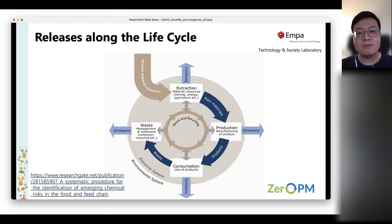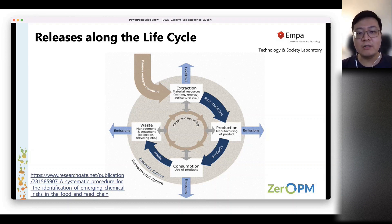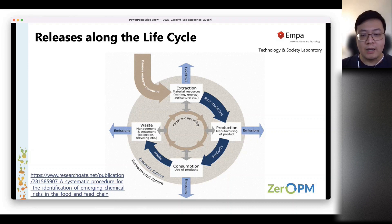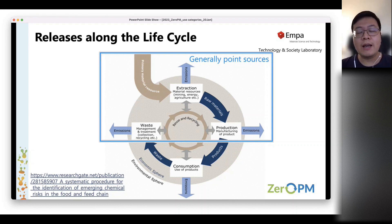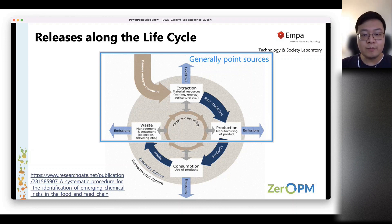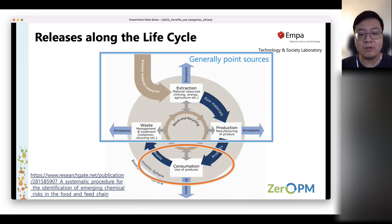In order to understand the release, we need to look at the life cycle of chemicals. It starts from extraction, to production, to consumption, and to the waste or end-of-life treatment stage. Generally, the extraction, production, and waste stages are normally point sources that need to be categorised, but the release during the use phase can be much more complex. This is often the challenge in understanding the release of chemicals.